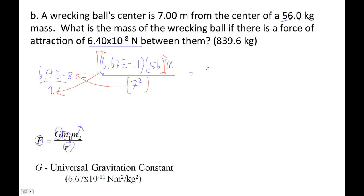That's what I'm doing in my calculator. So 6.4 E minus 8, times 7 squared, divided by 6.67 E minus 11, divided by 56. Boom. And I'm getting 839.58.